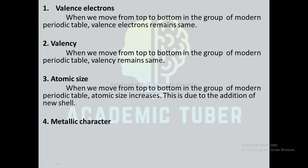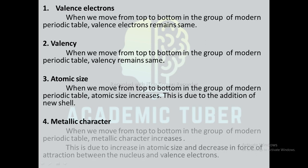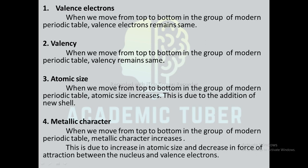Next one is metallic character: when we move from top to bottom in a group of the modern periodic table, metallic character increases. This is due to the increase in atomic size and decrease in force of attraction between the nucleus and the valence electron.